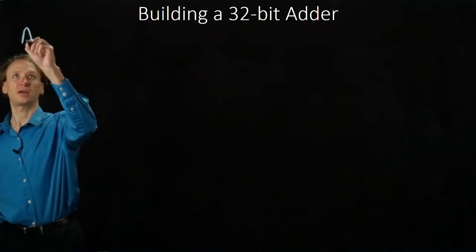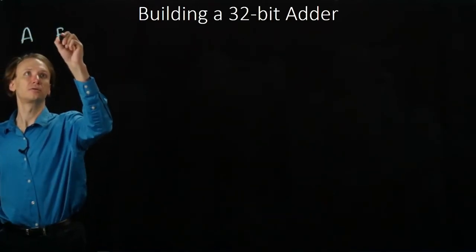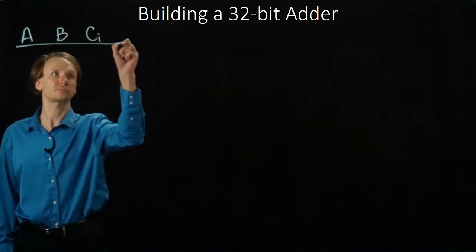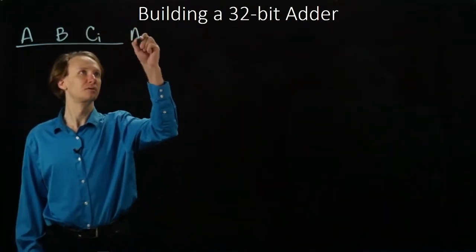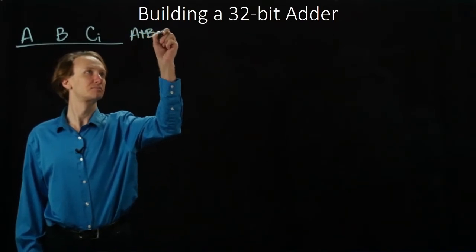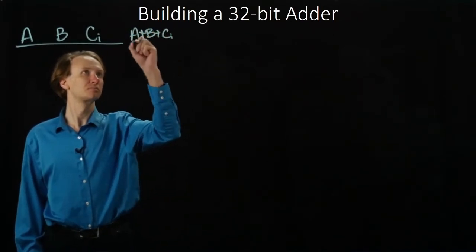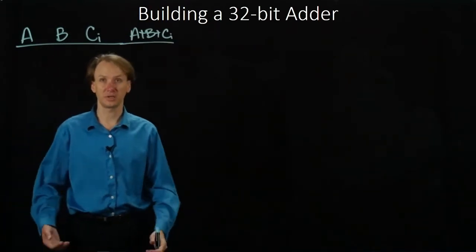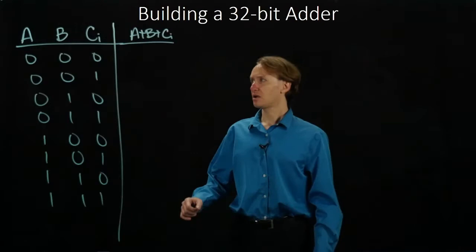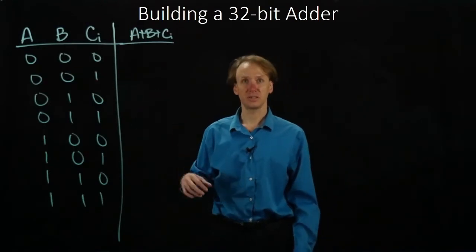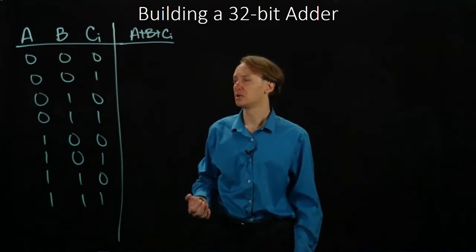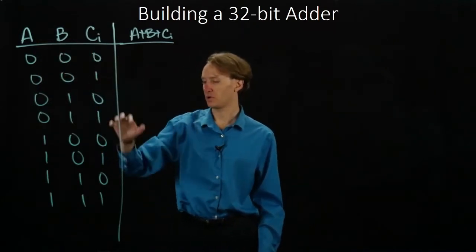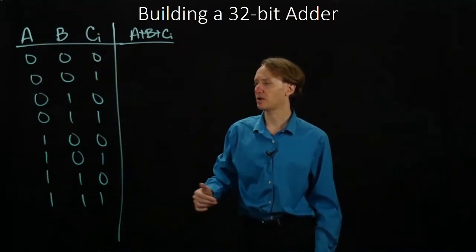So we'll have A, B, and a carry-in. And we will be interested in calculating A plus B plus the carry-in line. This time I have three different inputs, each of which has two possible values, so I have two to the third entries in my table. So I have eight entries in my table.